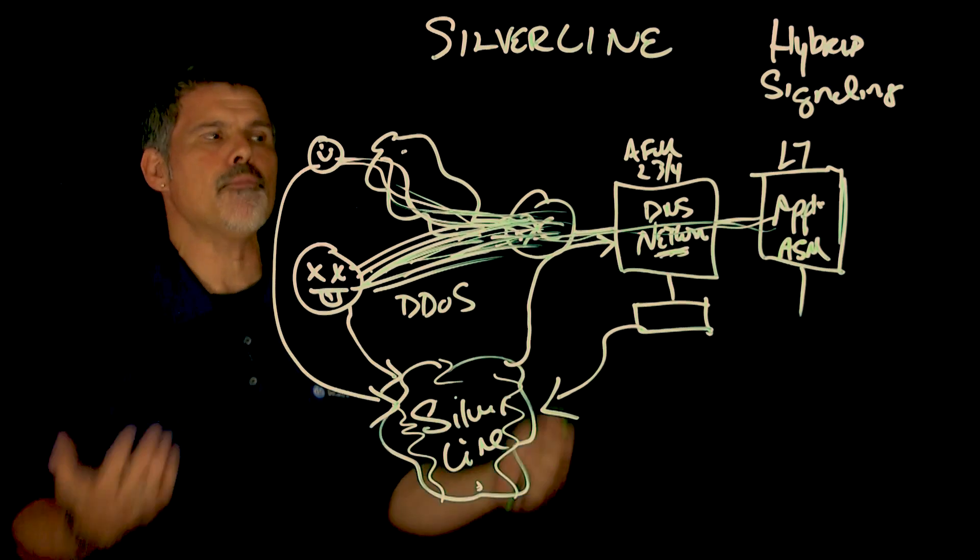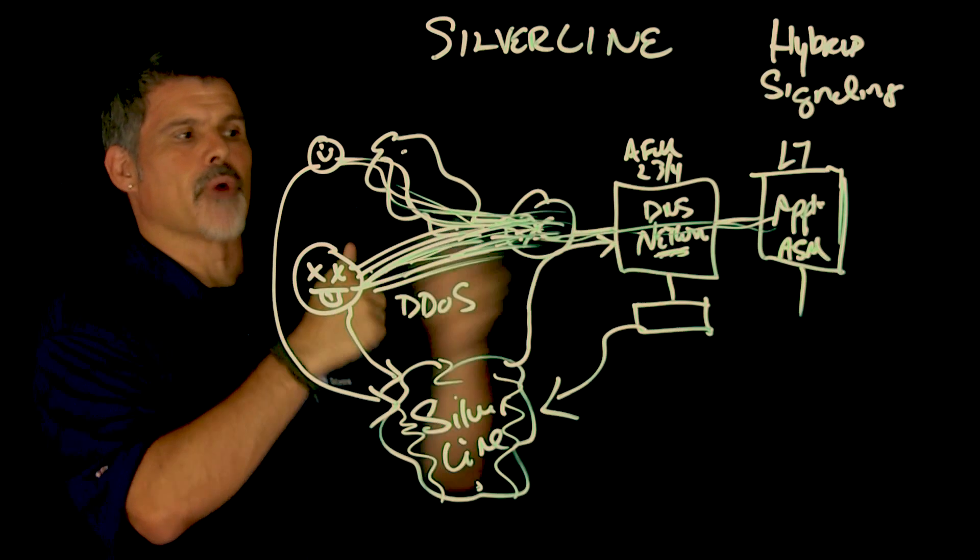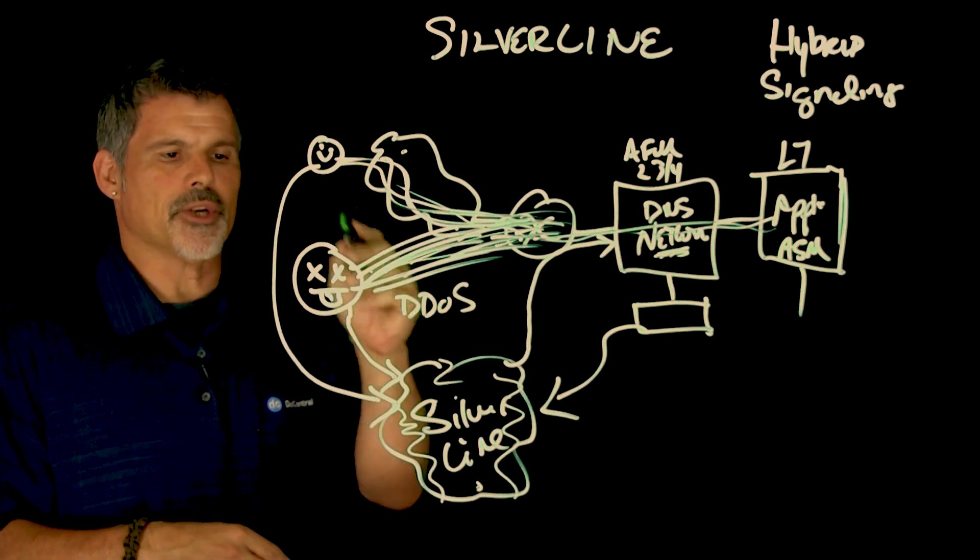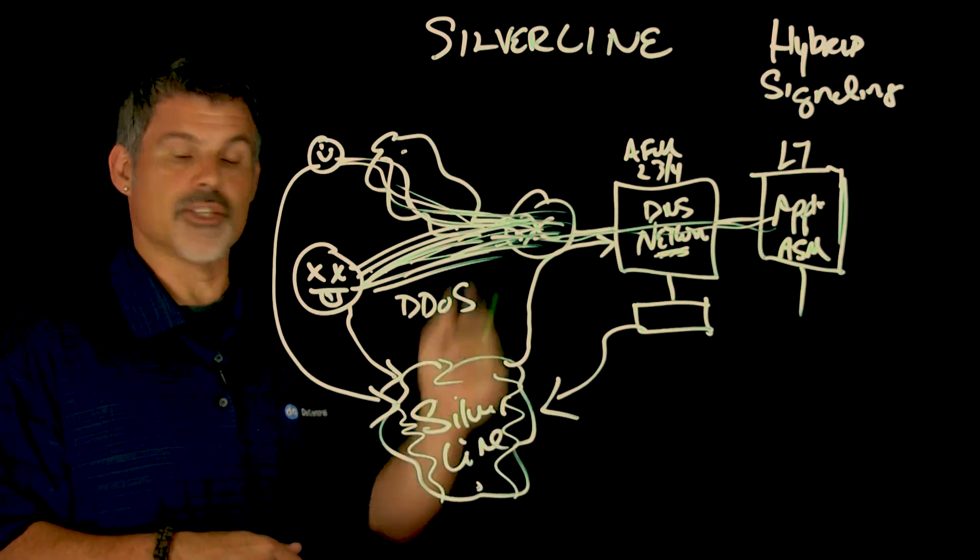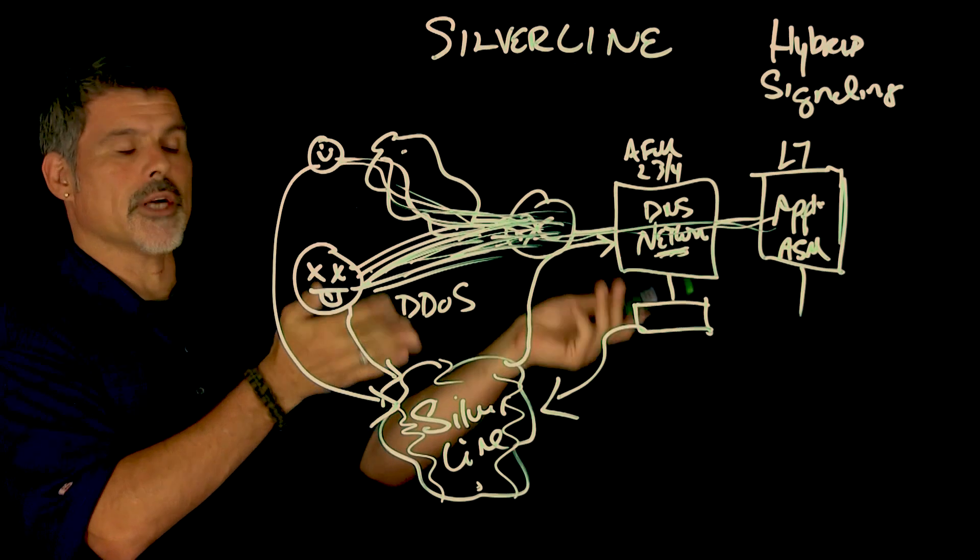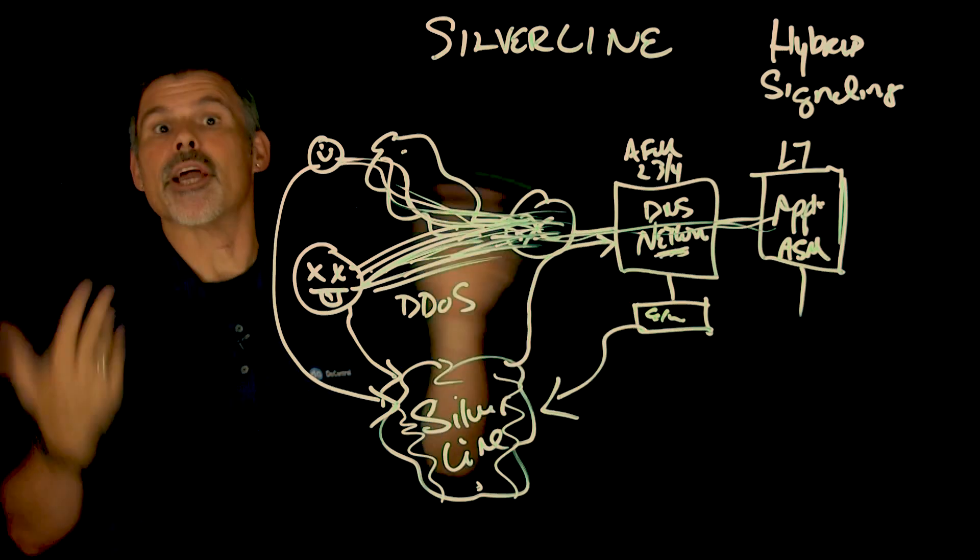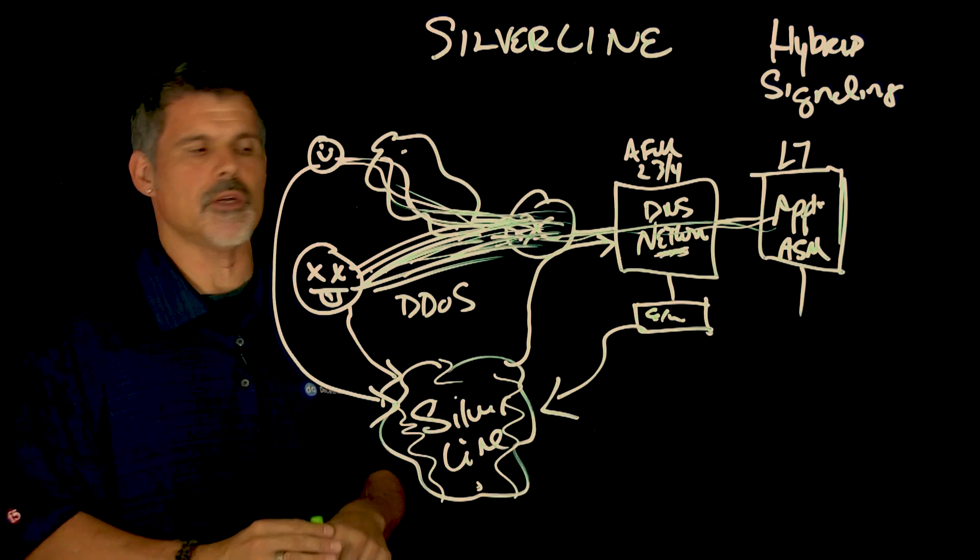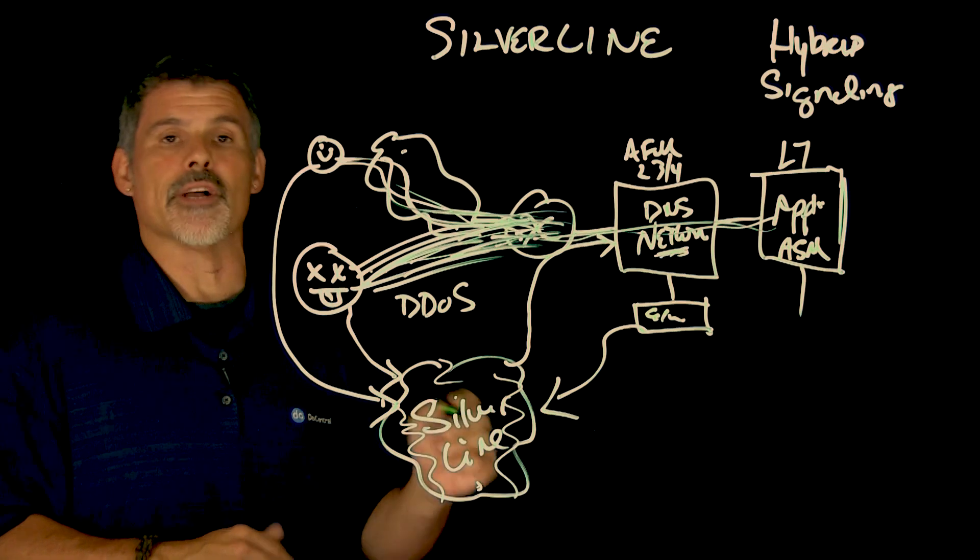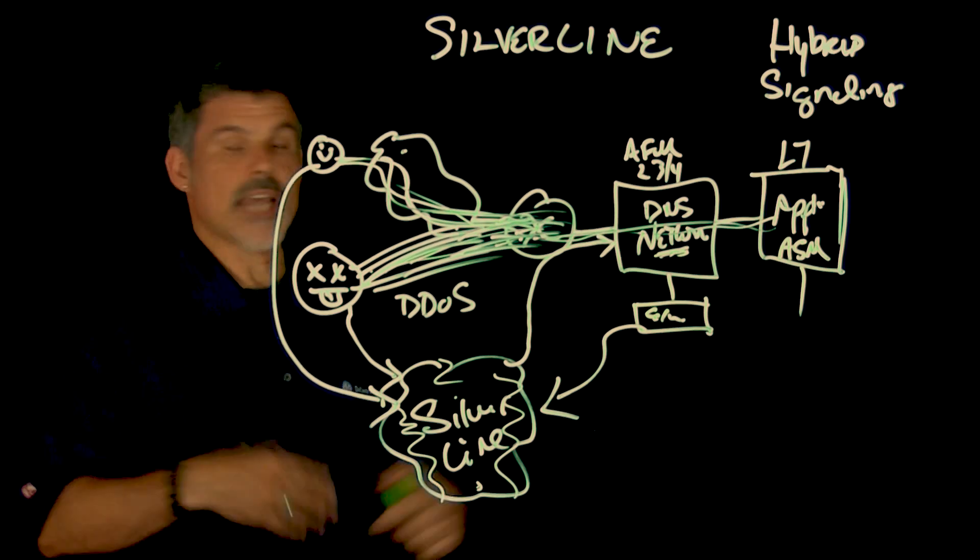And now this is pretty cool, because you have a hybrid solution to where you get overloaded, for instance it breaks a threshold, and then our security operations team can do a DNS redirect. So then Silverline starts taking the traffic, they're scrubbing it and sending the clean stuff to your data center. So there's a signal sent to Silverline, we need some help, can you take over the load. And then once it drops below the threshold, another signal is sent to say, okay, maybe we don't need the Silverline backup anymore, we can take the traffic ourselves.